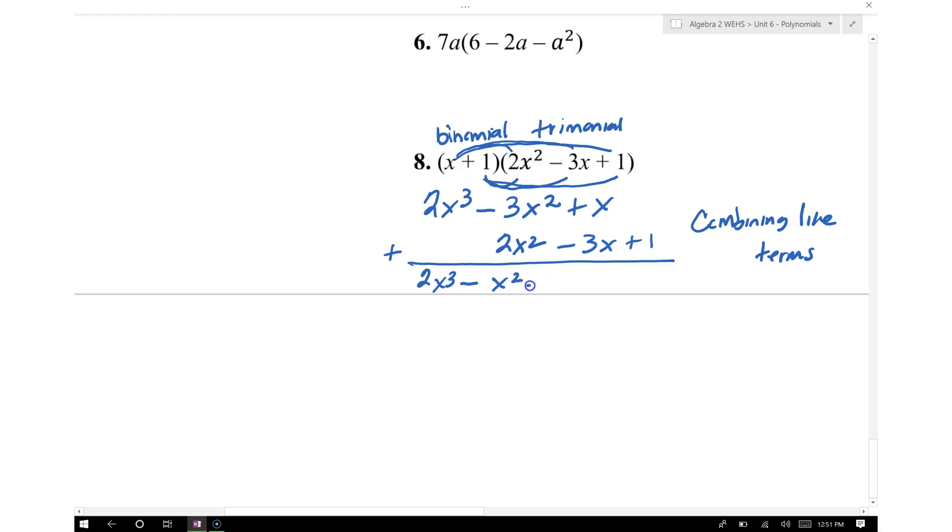And we know that x minus 3x gives us negative 2x. And then since we didn't have anything up here with this constant, we're going to go ahead and write plus 1. So when we multiply the binomial times the trinomial, we get the following as a product.